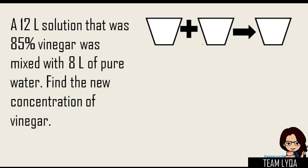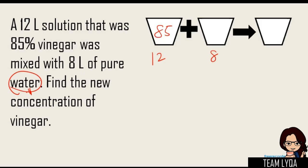This question says: 'A 12-liter solution that was 85% vinegar was mixed with 8 liters of pure water. Find the new concentration of vinegar.' Same thing — you just place the concentration value inside. When it comes to pure water, think about it: how much vinegar is there in water? If you buy water and drink it, of course if it had vinegar mixed in, it wouldn't be pure anymore. So pure water means 0% vinegar — or 0% alcohol, or whatever the other substance is.